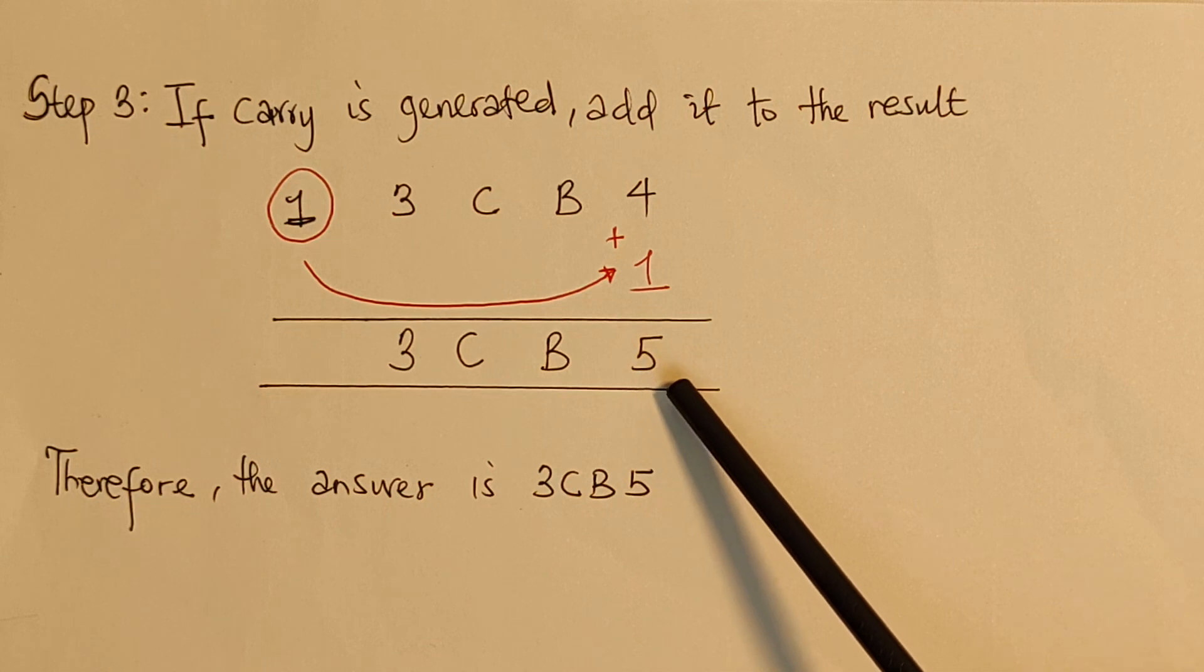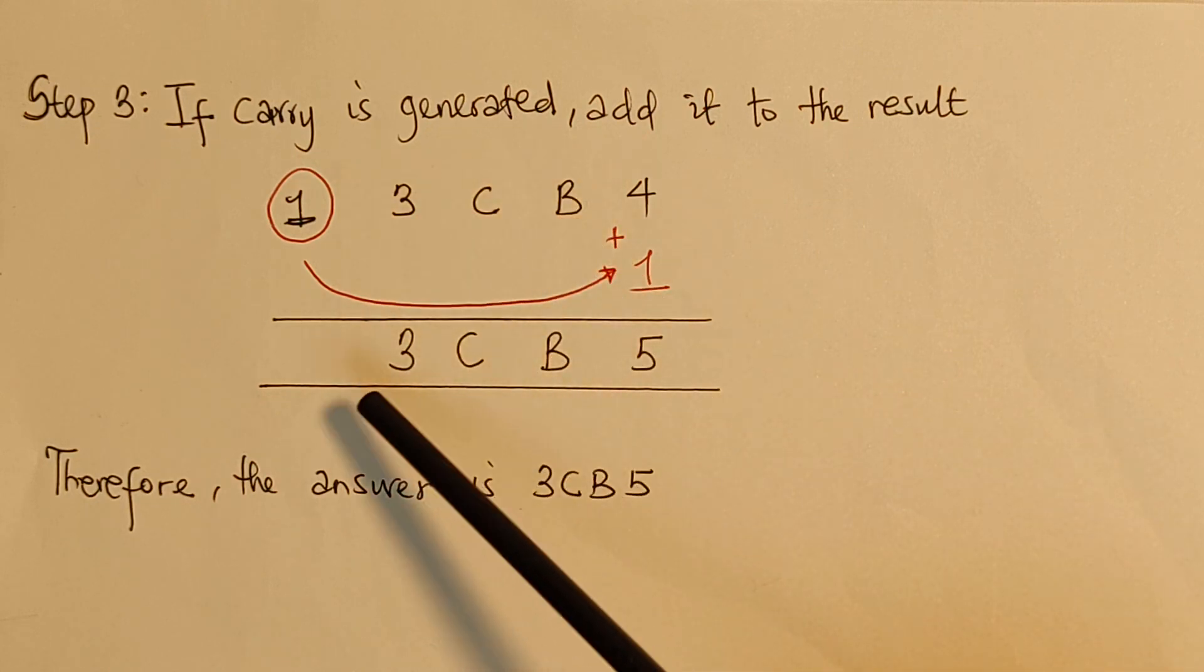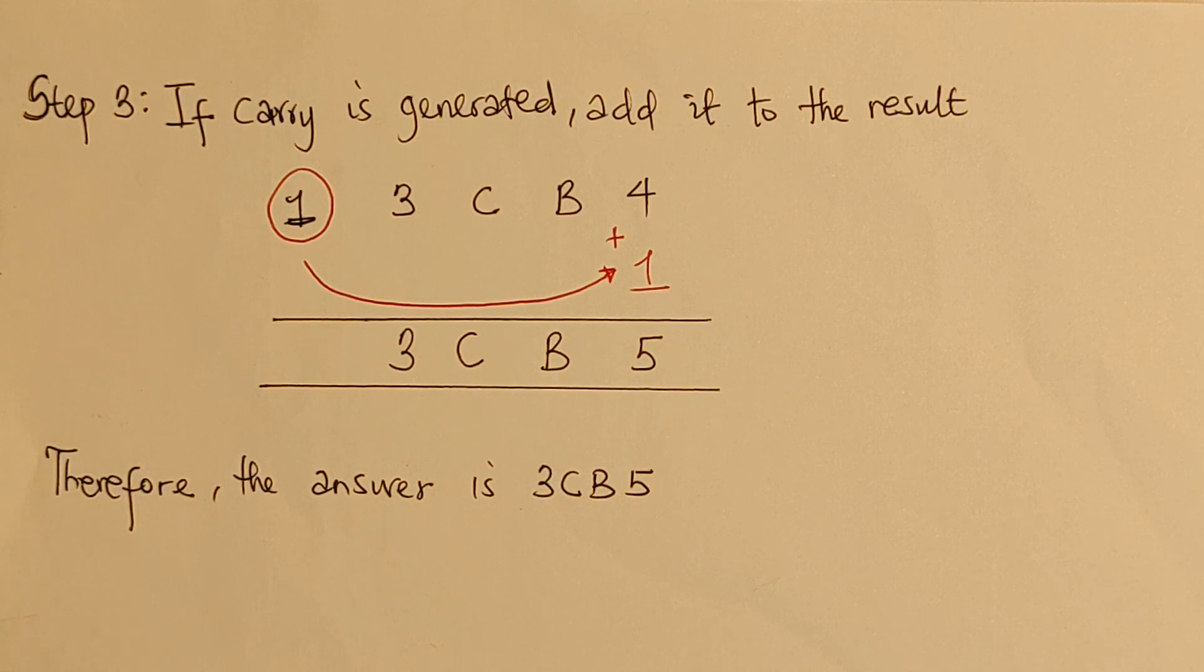So, when we add, we are going to have 4 plus 1 will be 5. There is no value here. It comes back to be BC3, respectively. So, therefore, we are going to say that the answer for this in case 2, being the 15's complement subtraction for the given value, the answer is 3CB5.